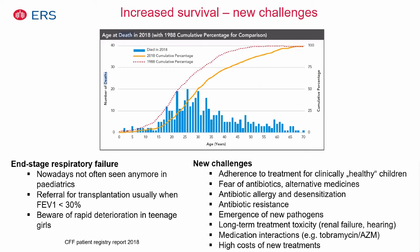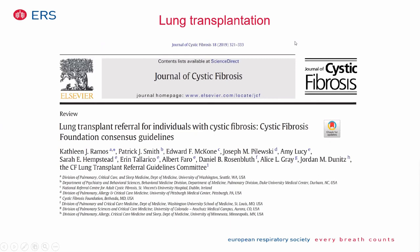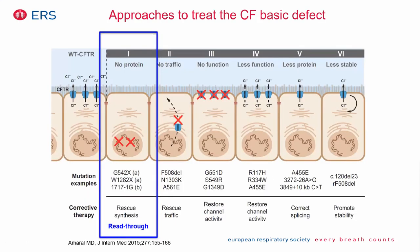Nowadays in pediatrics, lung transplantation is rarely needed because children are not dying as frequently. In 1988, the median age of death was around 22 years, whereas now it is approximately 30 years. Referral for lung transplantation occurs when lung function falls below 30%. Current challenges include antibiotic allergy, antimicrobial resistance, and emerging new pathogens. A good review covers all indications and contraindications for lung transplantation.